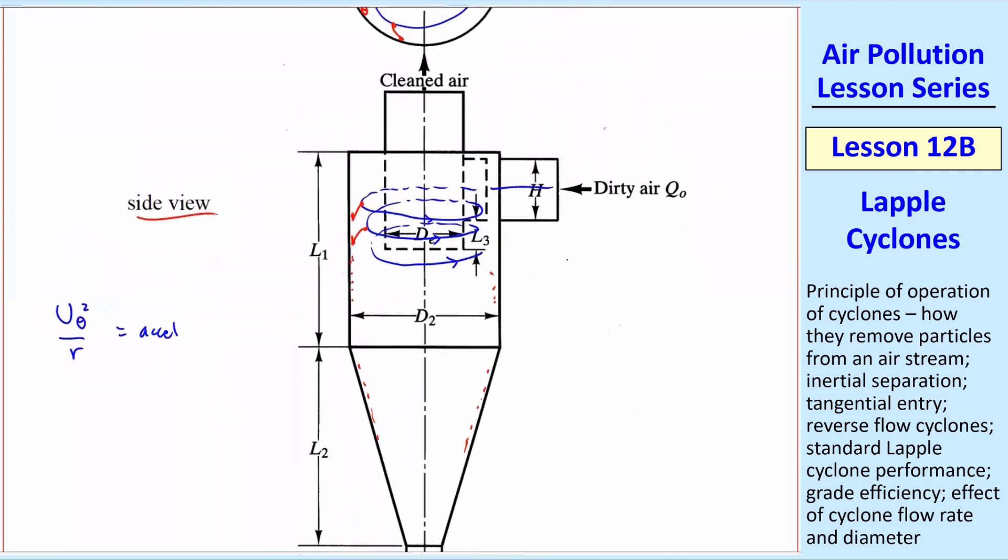but also the outlet is recessed down into the unit. So the air also has to go around a sharp corner on these edges. There's a tube sticking down into this from the top. So there's additional inertial separation from that tight turn of the air. So those particles get flung towards the bottom, and they just fall out as well.